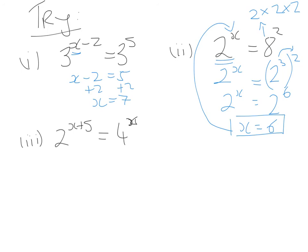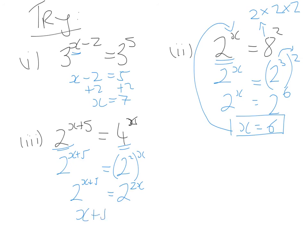For the final question, we want both sides to have the same base. The left hand side stays as is, but the right hand side needs to change: we know 2 times 2 gives 4, so we write 2 squared raised to the x, giving 2 raised to the 2x. That equals 2 raised to the x plus 5. Equating the indices: x plus 5 equals 2x. Subtracting x from both sides gives 5 equals x. You can also rearrange it the other way — either way will work perfectly.